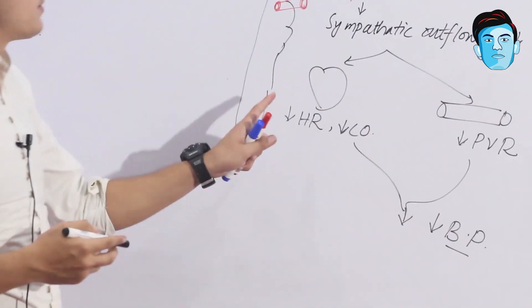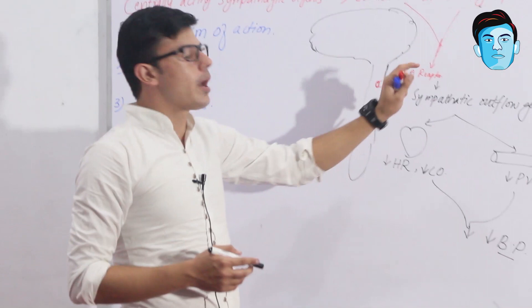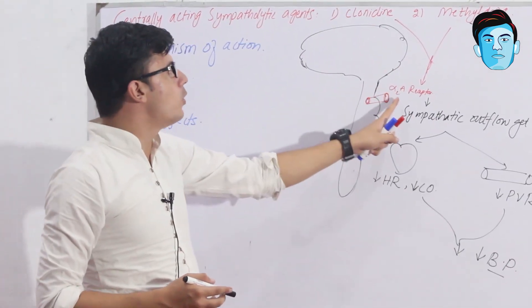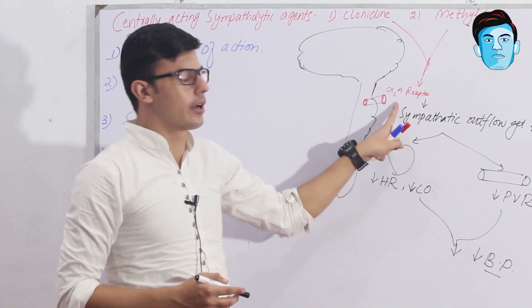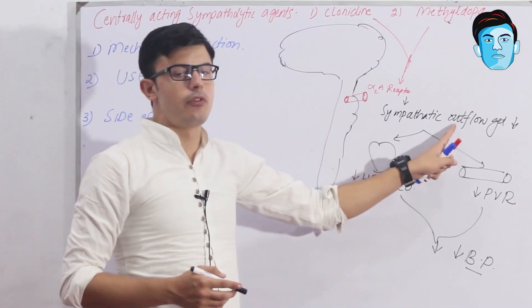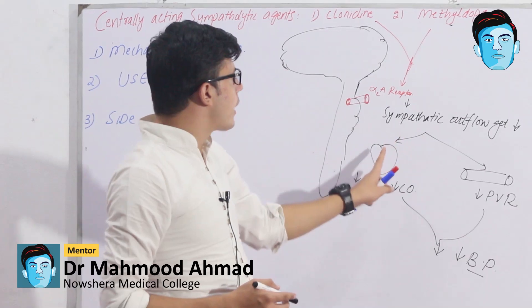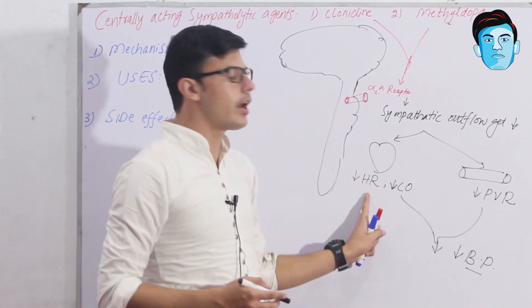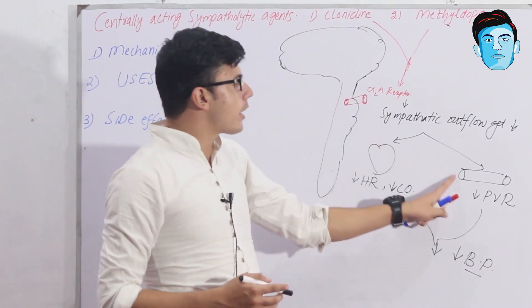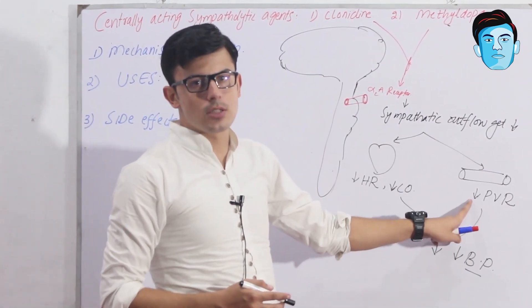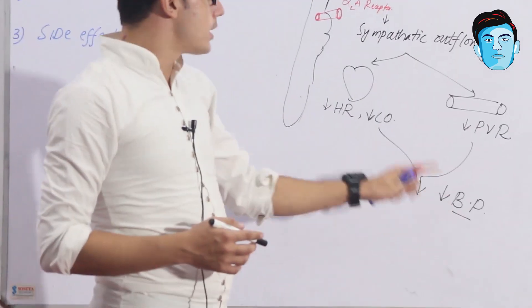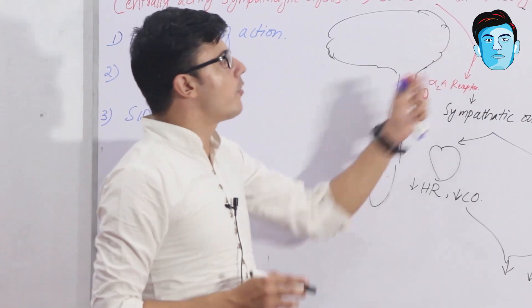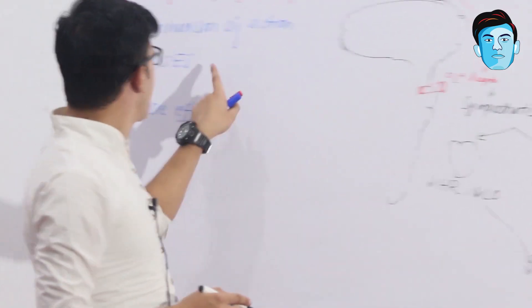So the general mechanism of action for clonidine and alpha methyl dopa is: they stimulate the alpha-2a receptor in the vasomotor center, sympathetic outflow decreases, and this acts on the heart — decreasing heart rate and cardiac contractility — and on blood vessels — decreasing peripheral vascular resistance — leading to decreased blood pressure.